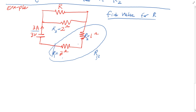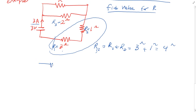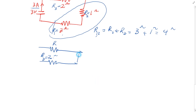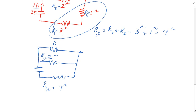I can replace R1 and R2 with one equivalent resistor, call it R1,2. These two are in series, so when two resistors are in series you simply add them: R1,2 equals R1 plus R2, which equals 3 ohm plus 1 ohm, giving 4 ohm. After simplifying the circuit, you have R (unknown), R3 (2 ohm), and R1,2 (4 ohm).